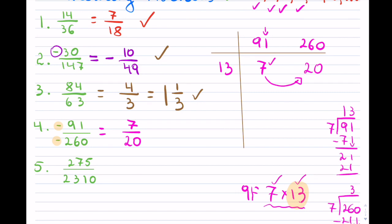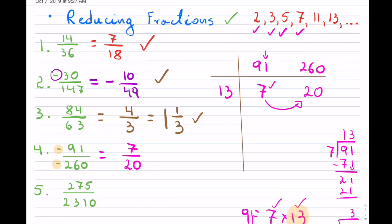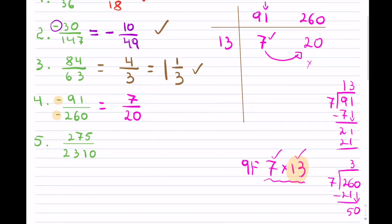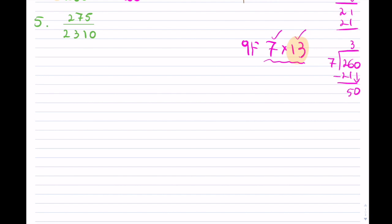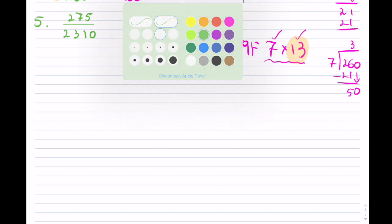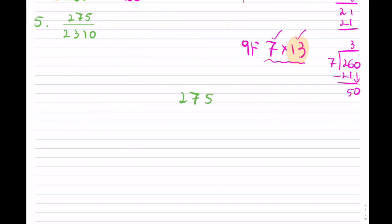In recapping: you take your fraction and check which primes go into both the numerator and denominator, continuing until you cannot find any further common primes. This last example — 275 over 2310 — is a great one to test yourself. It's highly unlikely you'll be asked something like this, but it provides guidance on how well you know the process.